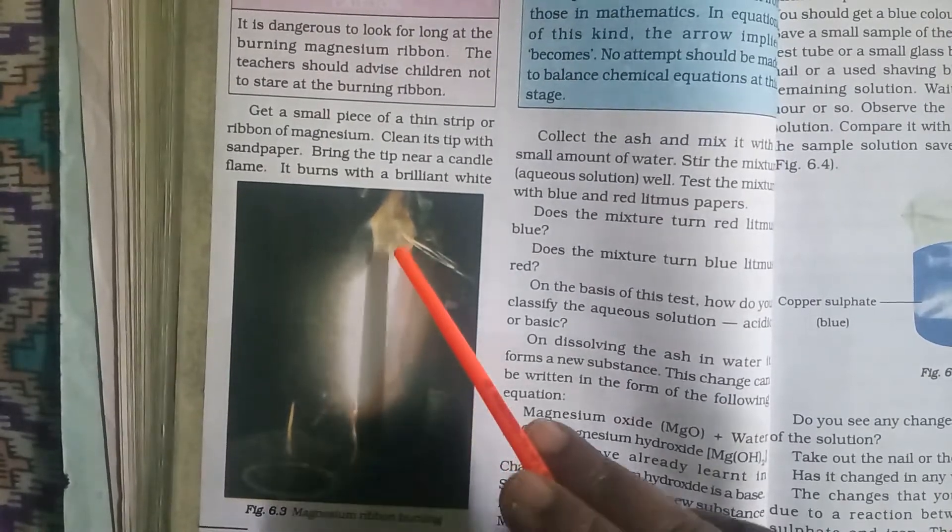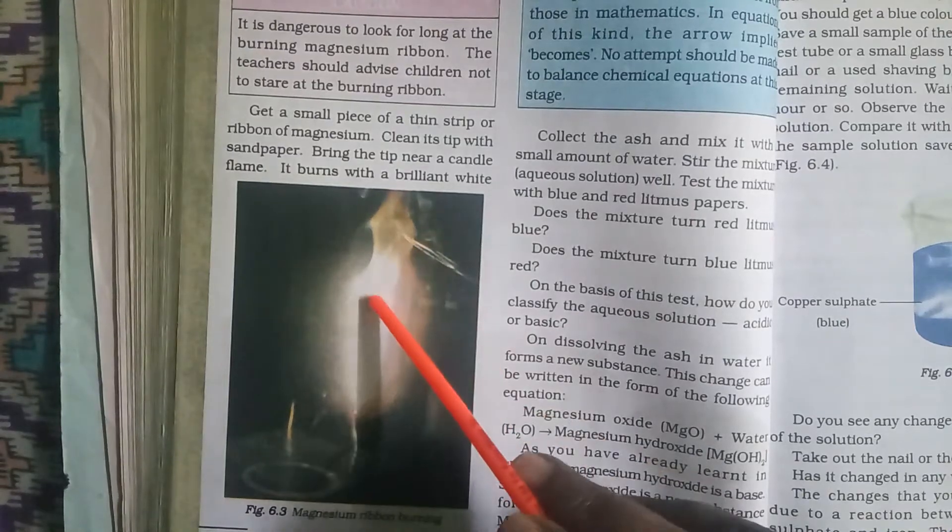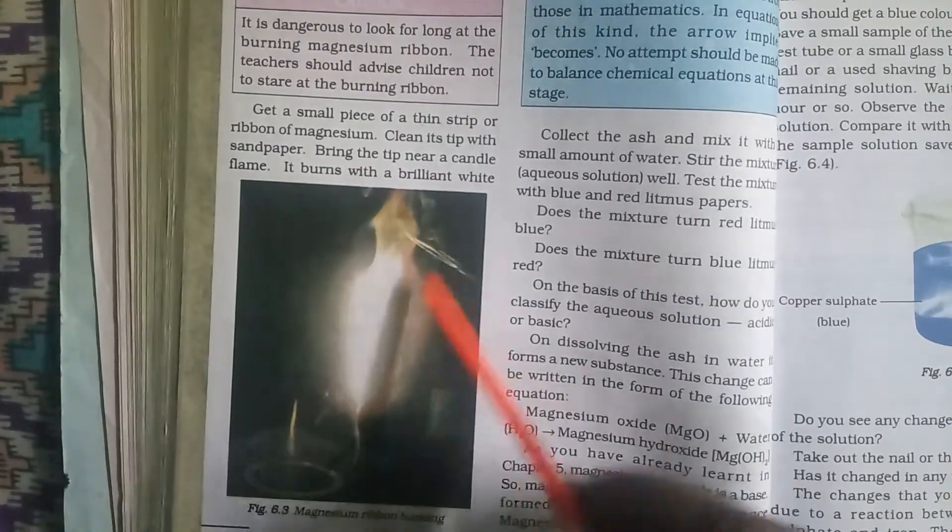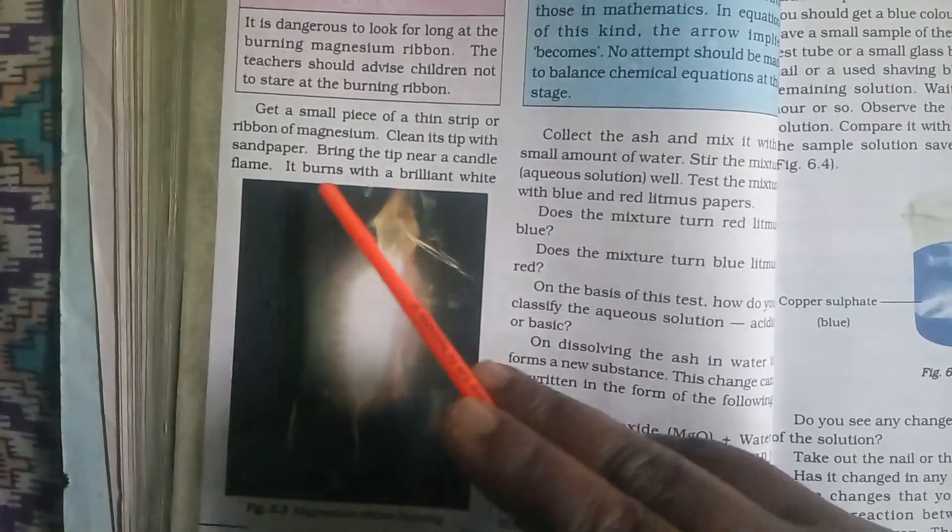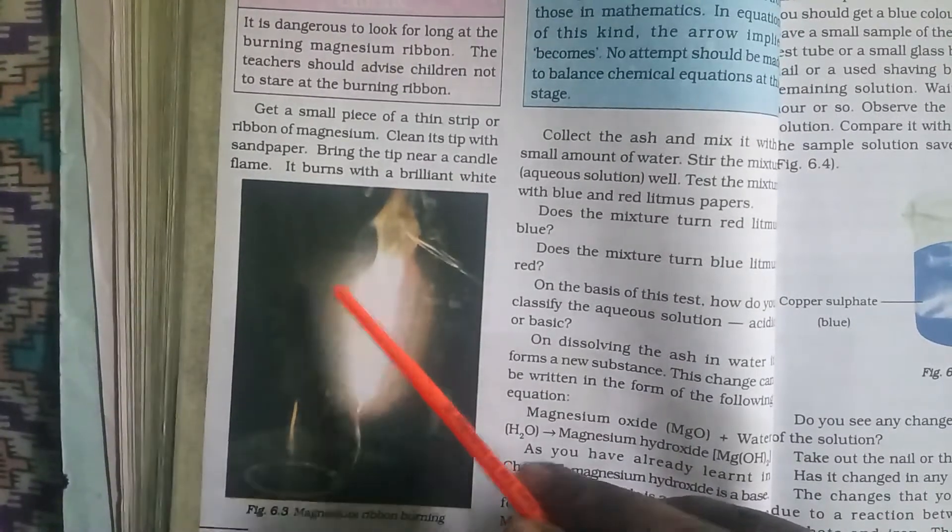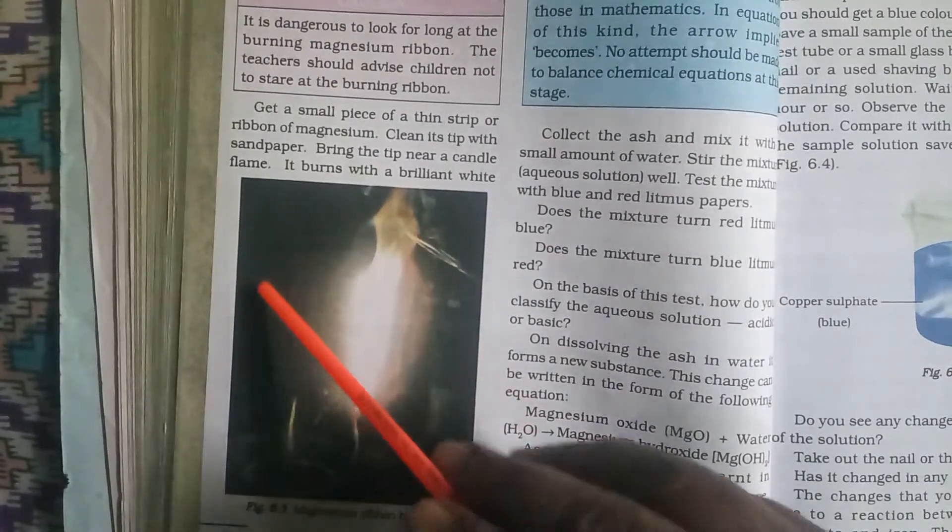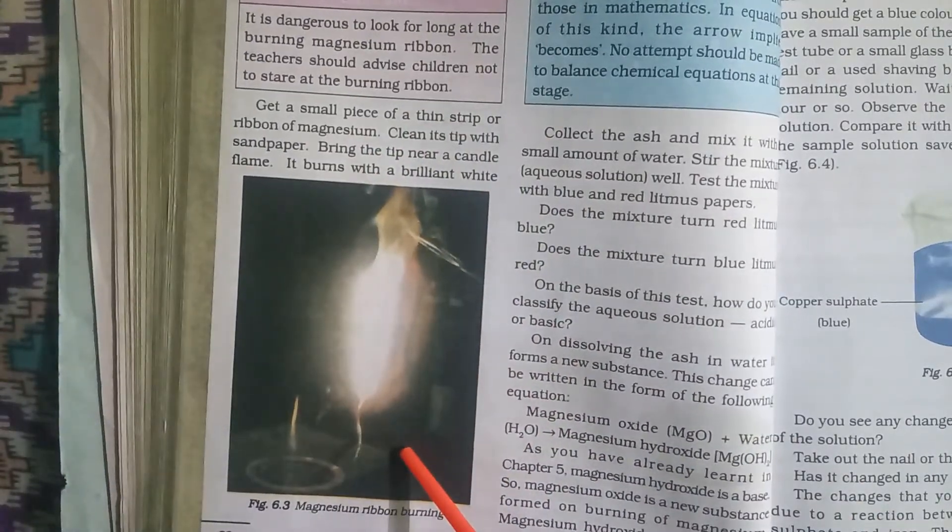We have magnesium wire here. When you take this magnesium wire towards the flame it starts burning. When it is burning it will react with the atmospheric air. That means magnesium wire reacts with the oxygen around it and forms magnesium oxide.